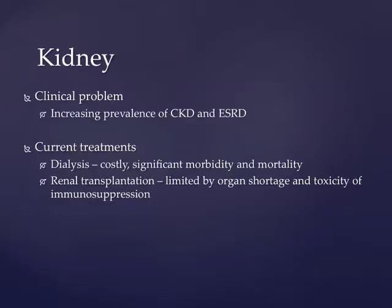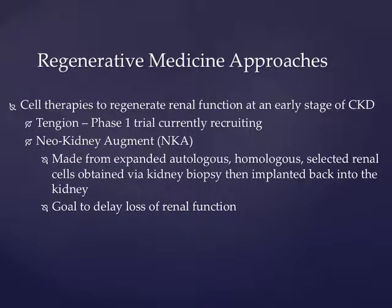Touching on the upper urinary tract: chronic kidney disease and end-stage renal disease are big issues we deal with in urology. There's an organ shortage — much more demand than supply — and dialysis is essentially terminal unless you can get off it. Tengion has a phase one trial underway with the neokidney augment — made from expanded autologous renal cells obtained by kidney biopsy and reinjected into the kidney, targeting healthy cells and stem cells to improve the diseased kidney environment with a goal to delay loss of renal function. No data yet; we expect to hear something in 2015.